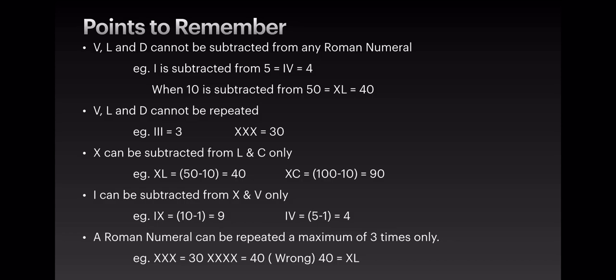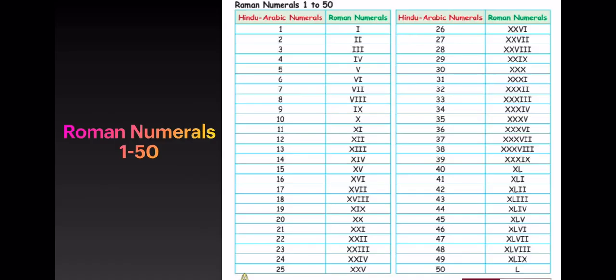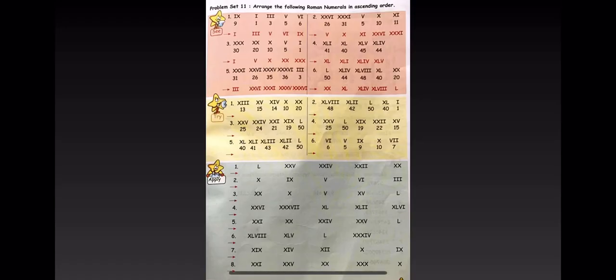A Roman numeral can be repeated a maximum of 3 times only. For example, XXX is 30, while XXXX — four times — is not valid; 40 is written as XL. Roman numerals from 1 to 15 have been listed in your textbook. Now let us move on to problem set 11.